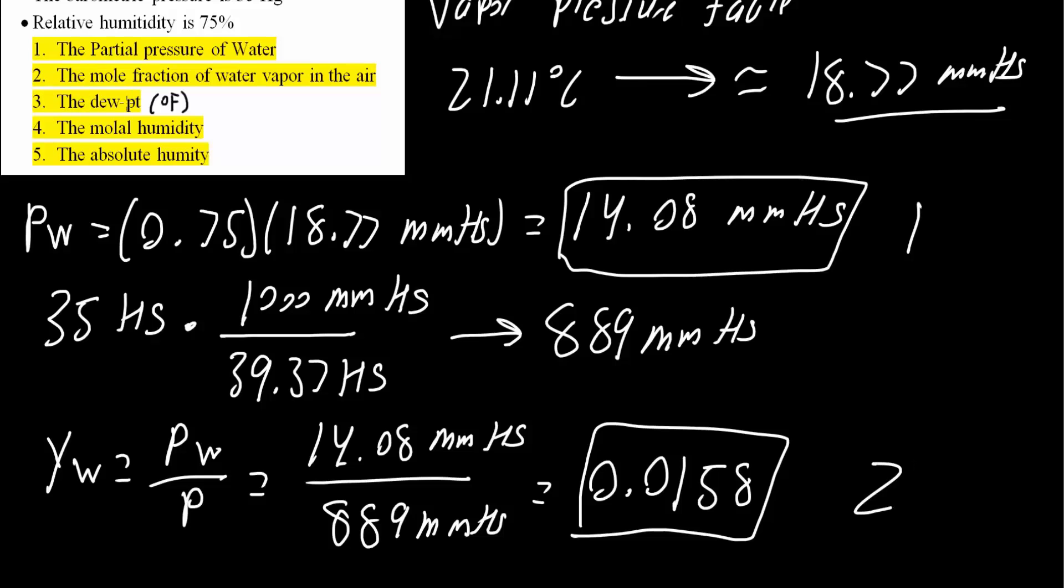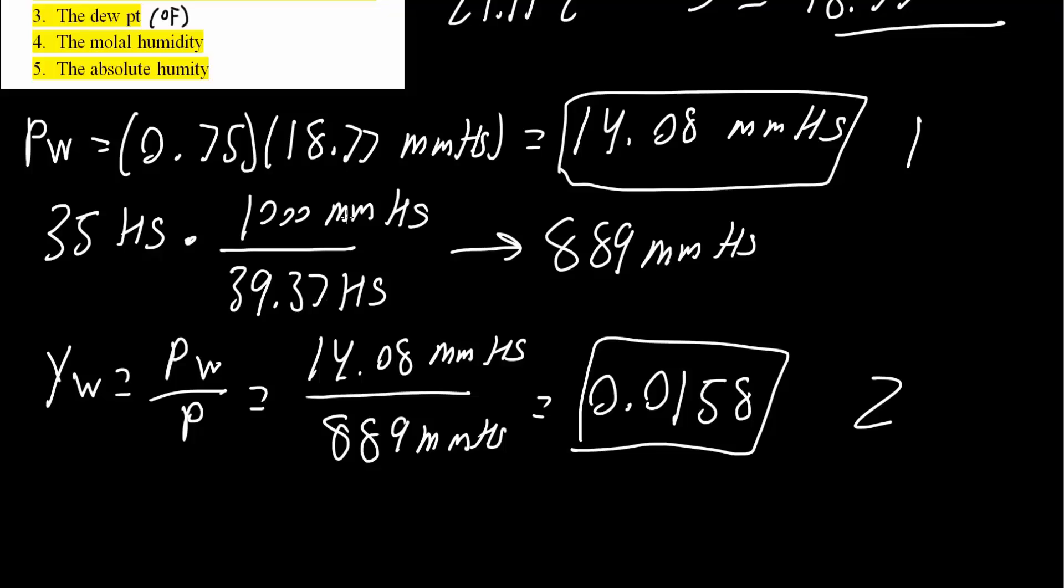Next, we will calculate dew point. To calculate dew point, we use another vapor pressure table. We take our Pw, which was 14.08 mg of mercury, and find this number in a vapor pressure table. The 14.08 mg of mercury corresponds to 16.5 degrees Celsius. Again, this is from a vapor pressure table, which you may find at the back of a textbook.